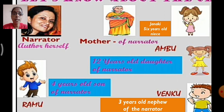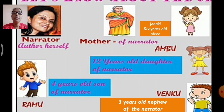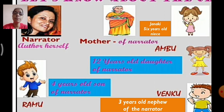Let's start with the story. Before we start, we get introduced to the characters. Who are the characters? One is the narrator herself — the author — who is telling the stories to her children. Then, the mother of the narrator. Then we have 6-year-old Janki, niece of the narrator. 12-year-old Ambu, daughter of the narrator. Then Ramu, 4-year-old son, and Venku, 3-year-old nephew.